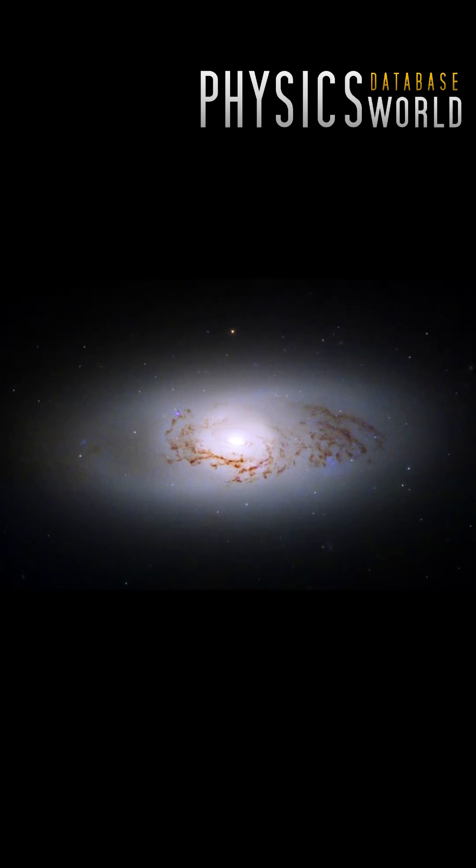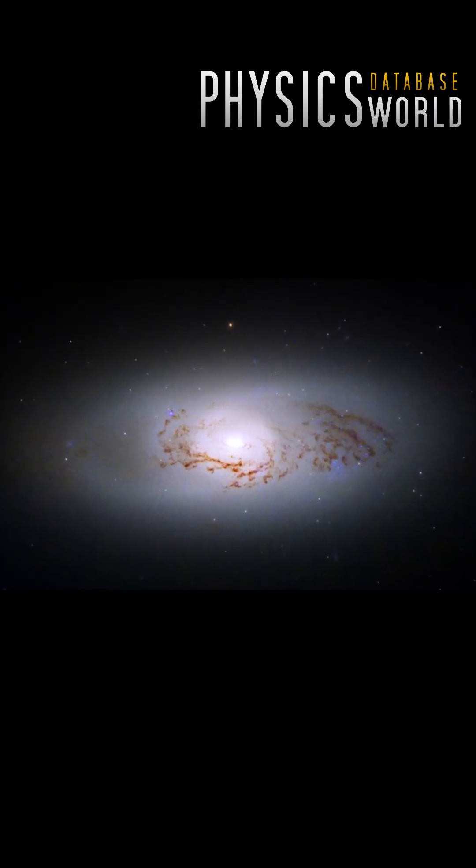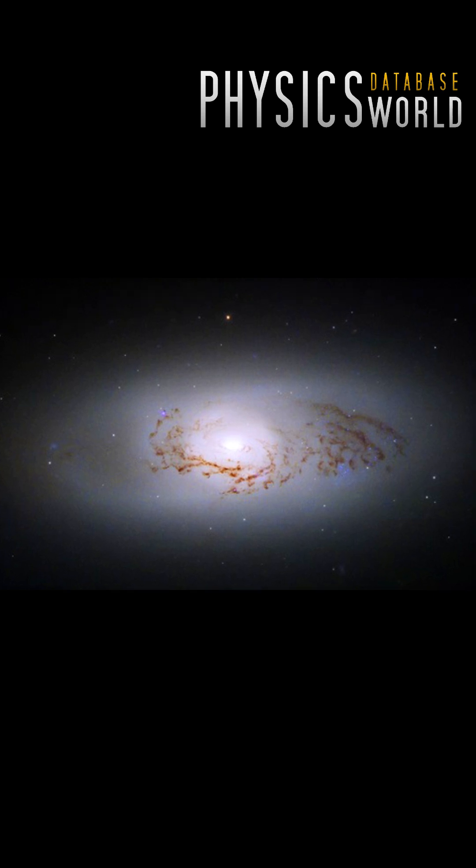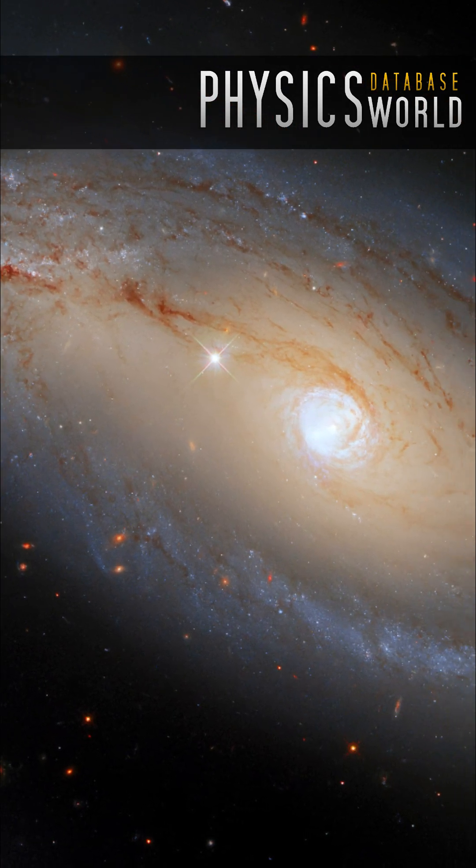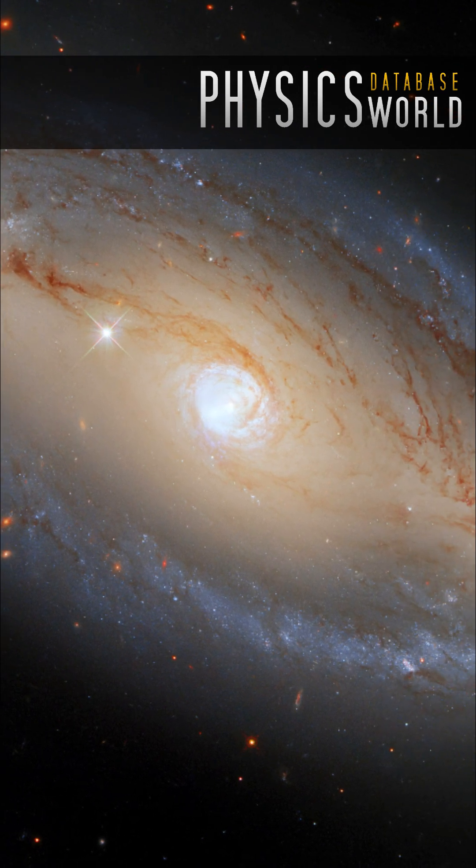Lenticular galaxies are disk-shaped galaxies that skirt the line between spirals and ellipticals. Unlike ellipticals, lenticulars do show some internal structure, hosting distinct central bulges surrounded by thin disks of stars.